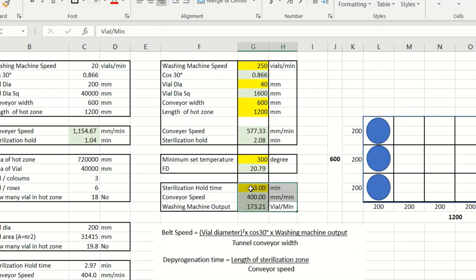Washing is 173, which is less than 150. My suggestion is why should you reduce capacity? With this configuration, if our set temperature is 300, our Fd will be 20. We can change this temperature to our minimum set temperature 310, and we can get 32.94 Fd which is more than 30.